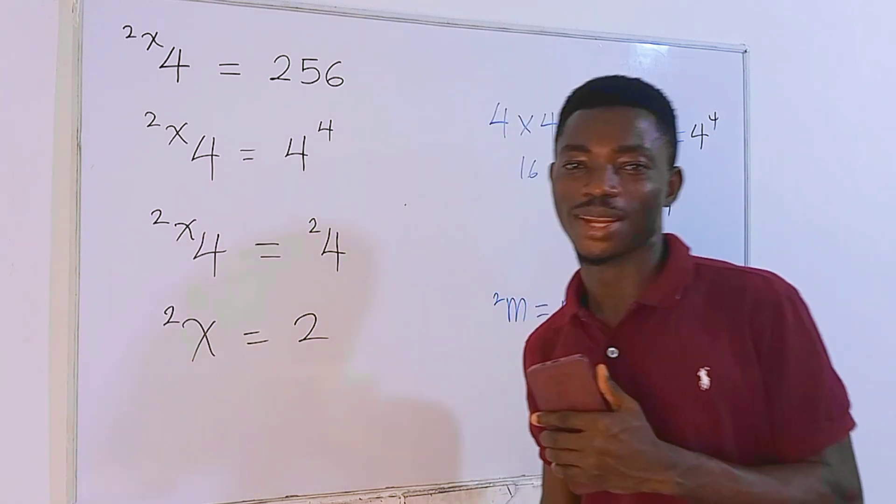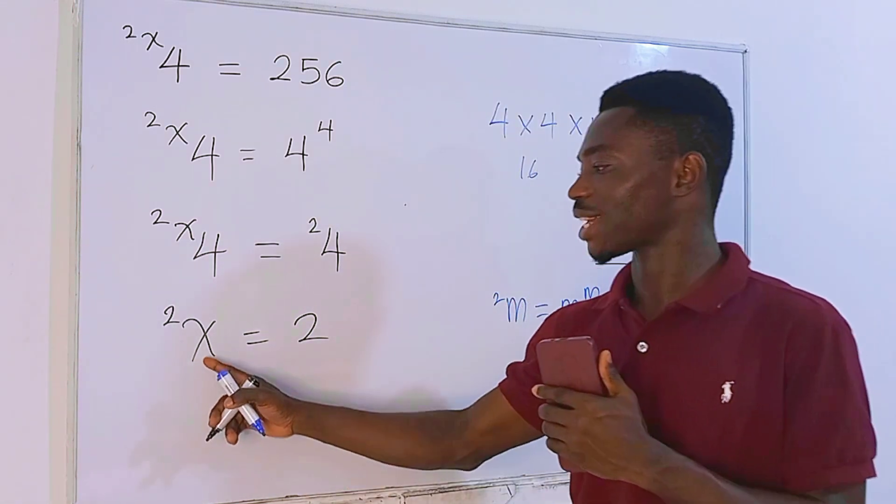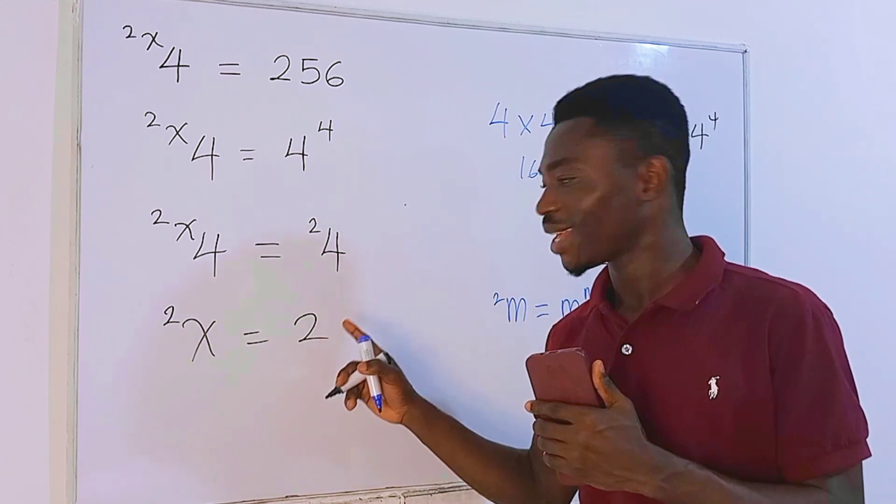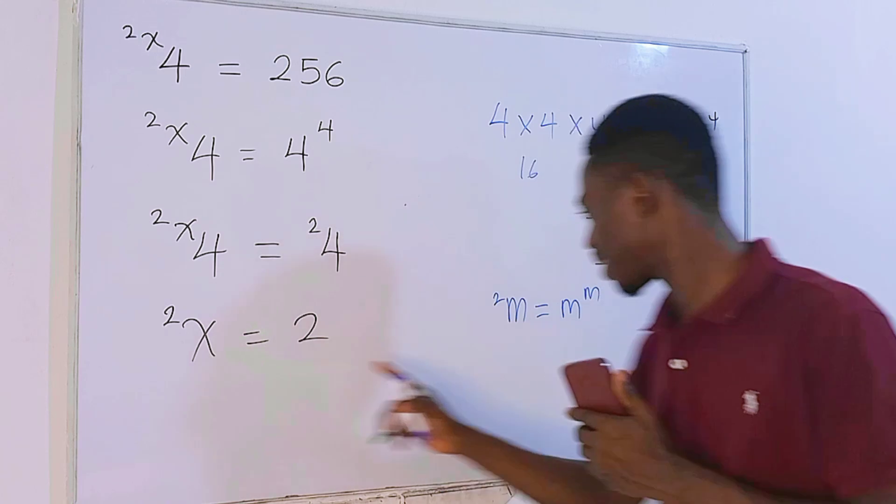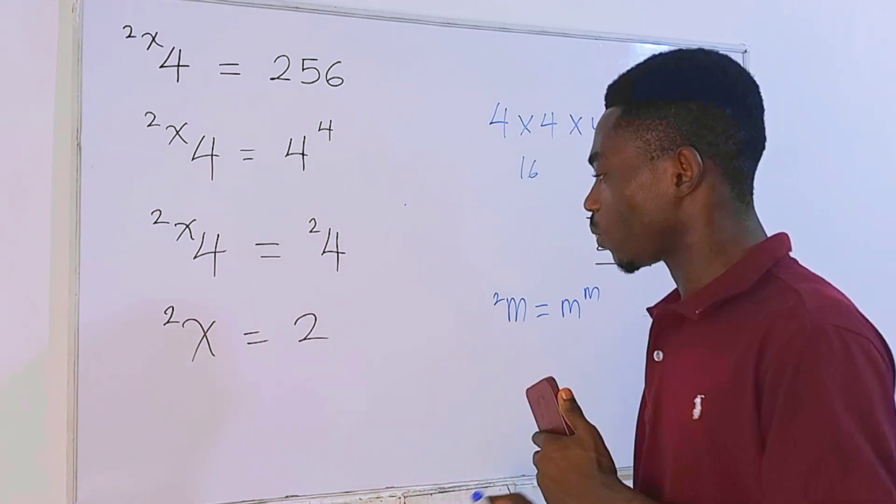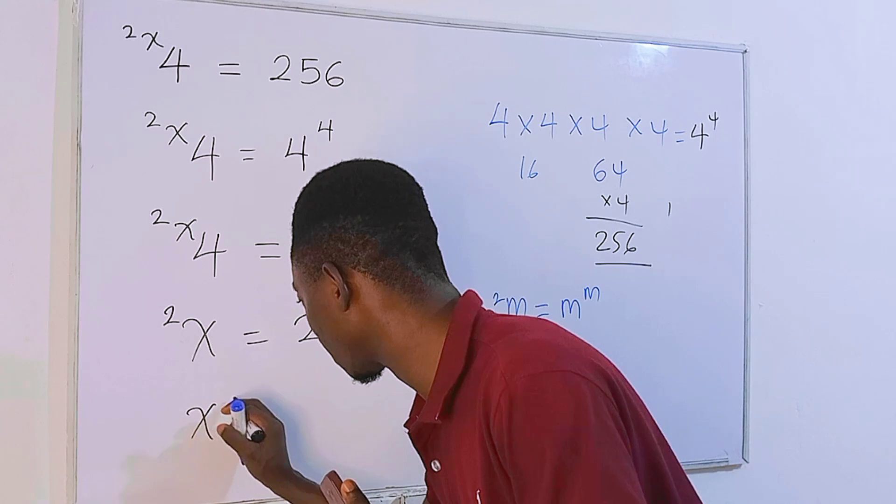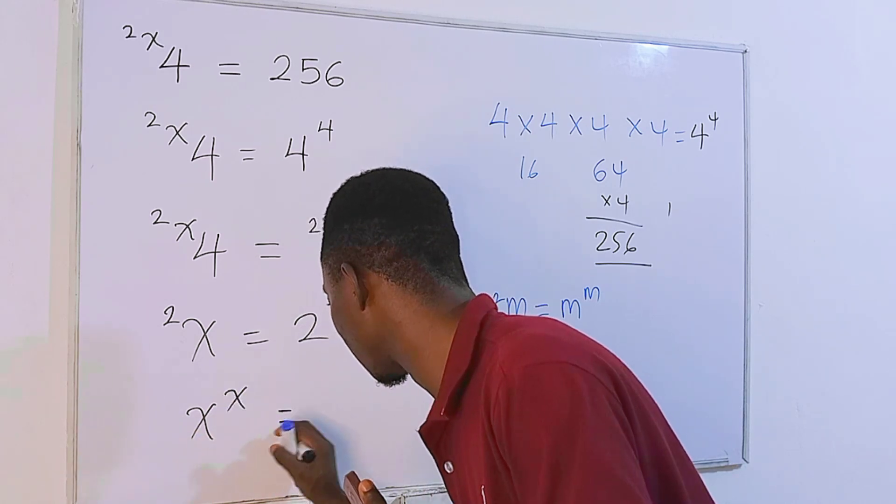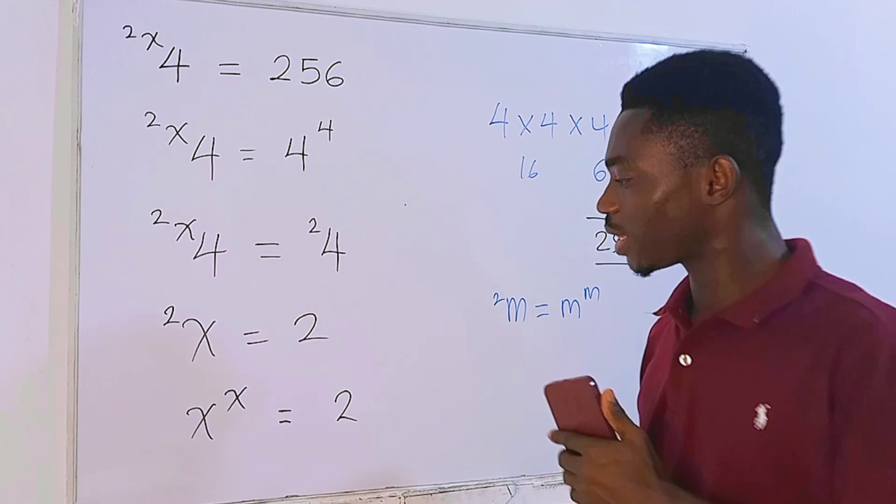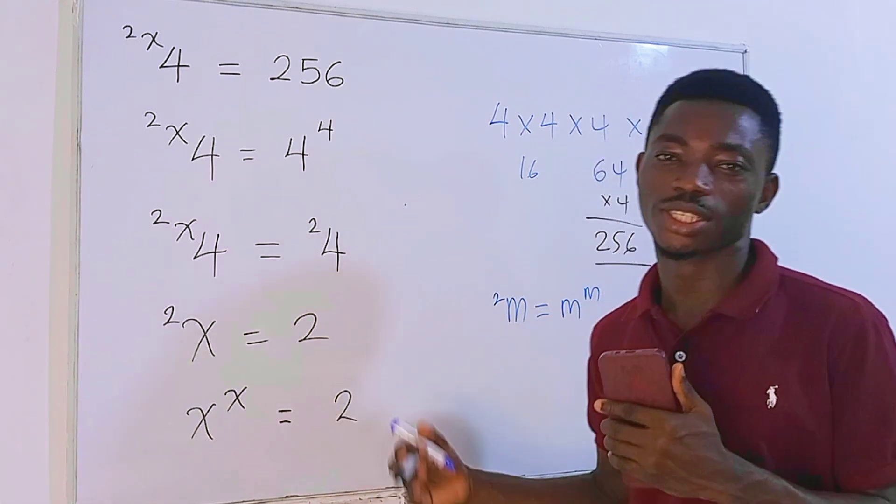Pretty interesting one. Now check this. We have x tetrated to 2 equals 2, and of course we can rewrite this in this form once again, which is obviously going to be x to the power x, and this equals 2. And this time around, we have a very nice exponential equation.